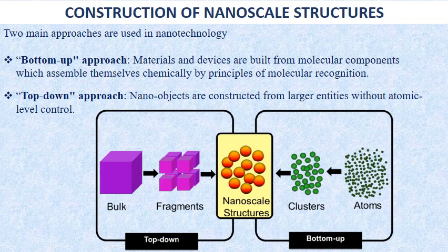To construct something so small, there are basically two main approaches used in nanotechnology. The first is the bottom-up approach, where materials and devices are built from molecular components which assemble themselves chemically by principles of molecular recognition. This approach utilizes concepts of molecular self-assembly and supramolecular chemistry to automatically arrange themselves into useful conformations, moving from small-sized material to clusters to finally nanoscale structures.